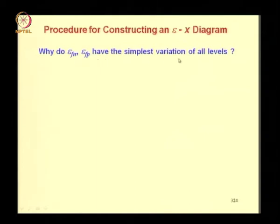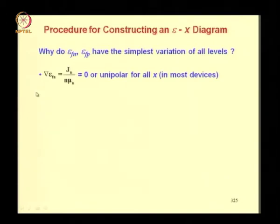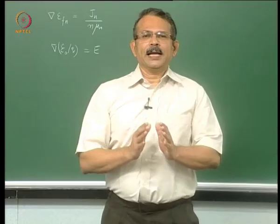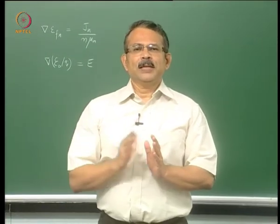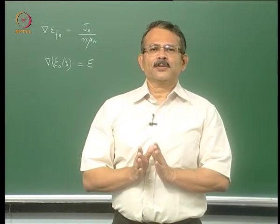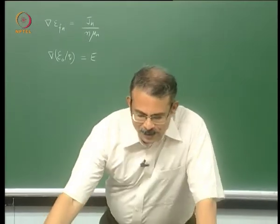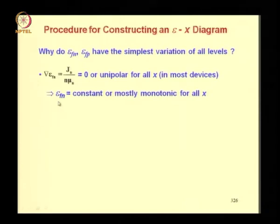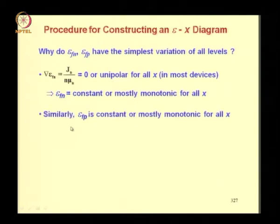Why do Efn and Efp have the simplest variation of all levels? Using the equation: gradient of Efn equals Jn divided by n*mu_n. The gradient of Efn is either zero in equilibrium or unipolar for all x in most devices, because Jn has to be in the same direction throughout the device. Similarly for Jp. This means Efn is either constant or mostly monotonic for all x, and the same applies to Efp.